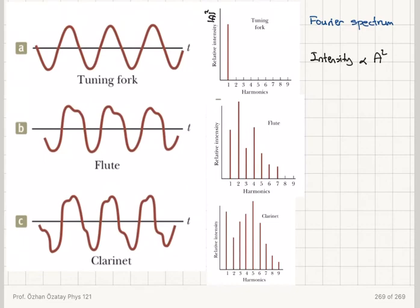The reason why we have different musical sounds from different instruments, even though they have the same fundamental frequency, is that they have different Fourier spectra. They are producing sounds that are slightly non-sinusoidal.